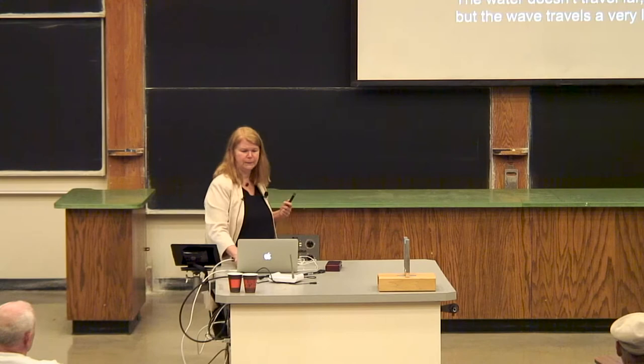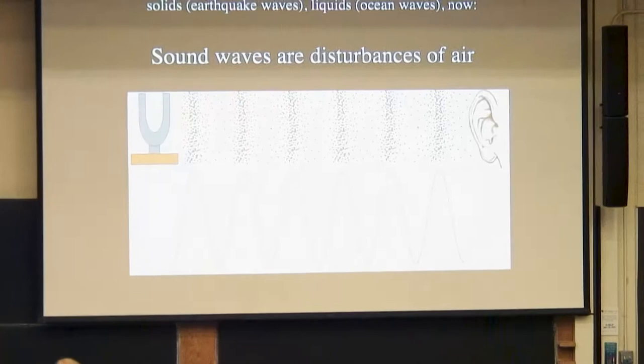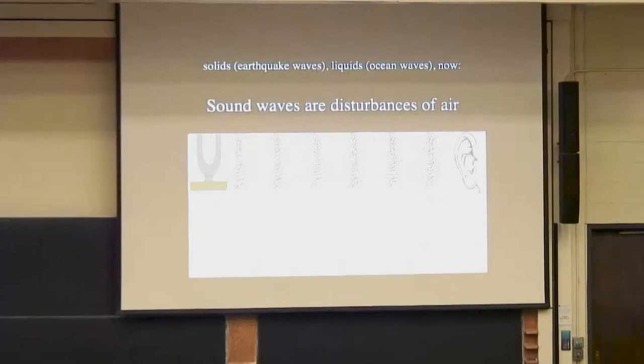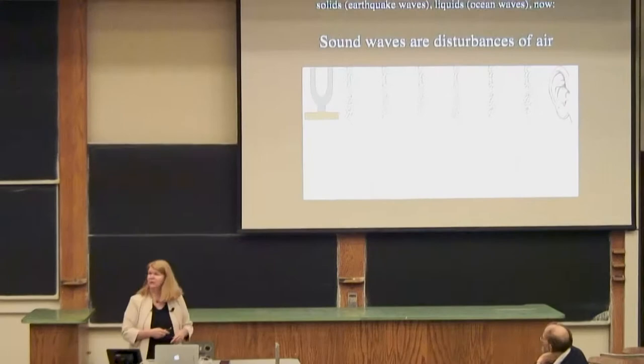Then there's the really classic kind of wave: the sound wave. Sound waves are disturbances of the air — it's actually a pressure wave. Instead of something bobbing up and down, you have something moving back and forth. The rarefied and compressed regions are actually moving along through space, but the particles themselves are not actually moving very far as they get to your ear. That's what's special about waves.